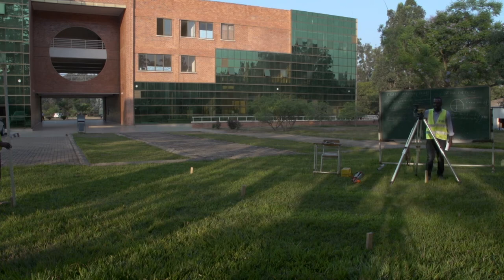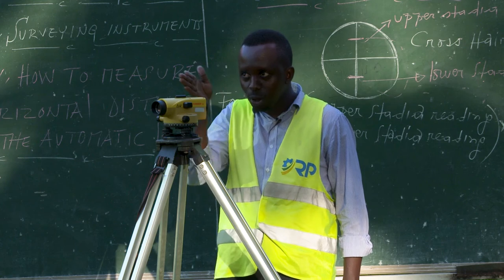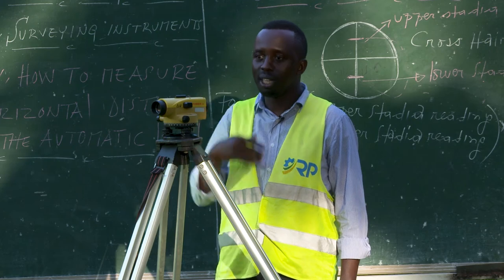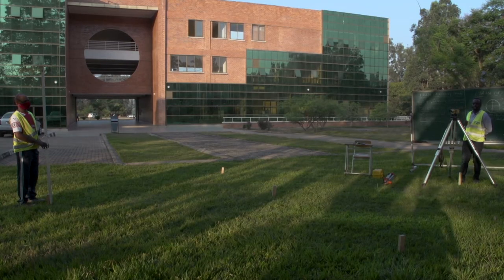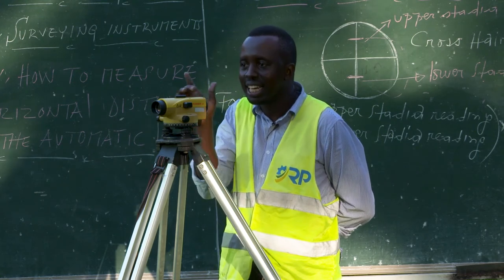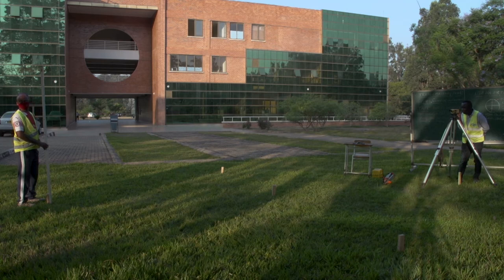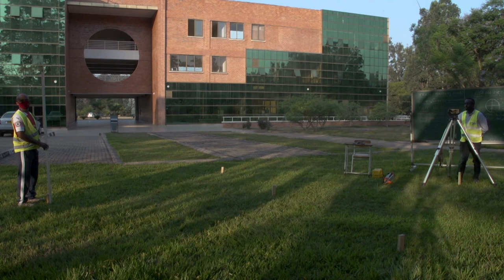Now in order to take the readings on the staff, there are short operations to perform. First, we are going to focus this instrument on the staff. The focusing process is done in two ways: first, we point this telescope toward the staff, then we use this focusing screw in order to bring the image of the staff clear and sharp.